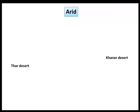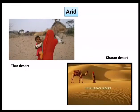Arid means dry. The areas of southwestern Balochistan, which has the Kharan Desert, and the Thar Desert in Sindh province, fall in the arid region. This area is dry and dusty throughout the year and there is very little rainfall. When it rains, the desert of Thar becomes green and flowers also begin to bloom.